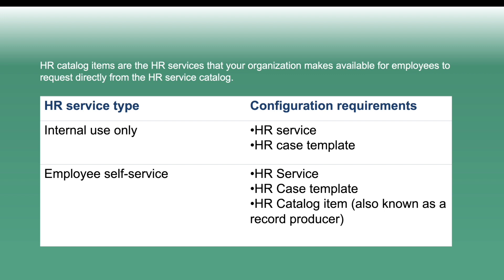HR catalog items are the HR services that your organization makes available for employees to request directly from the HR service catalog. In simple language, an HR catalog item is nothing but a record producer. As we discussed, HR service configuration depends on whether it is going to be used internally by HR agents or submitted by employees through the self-service portal.